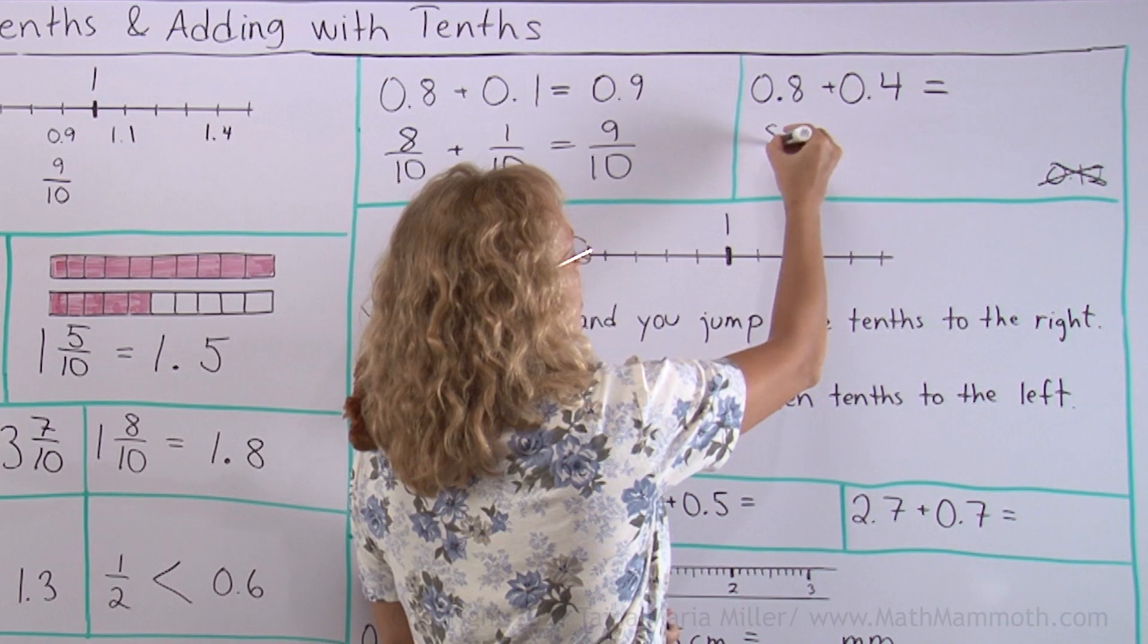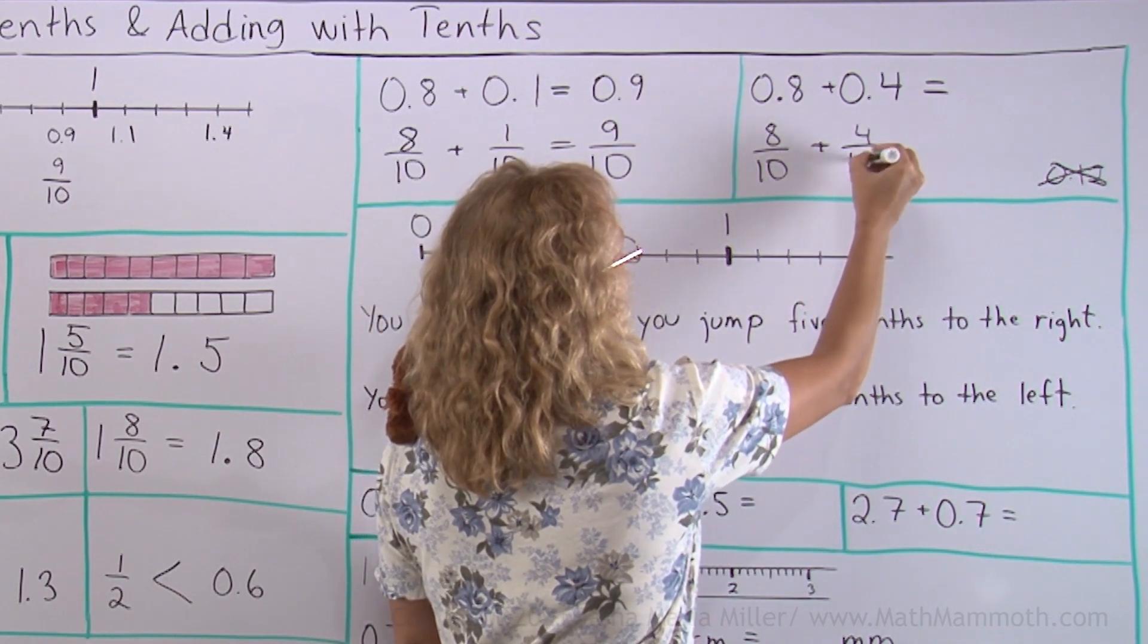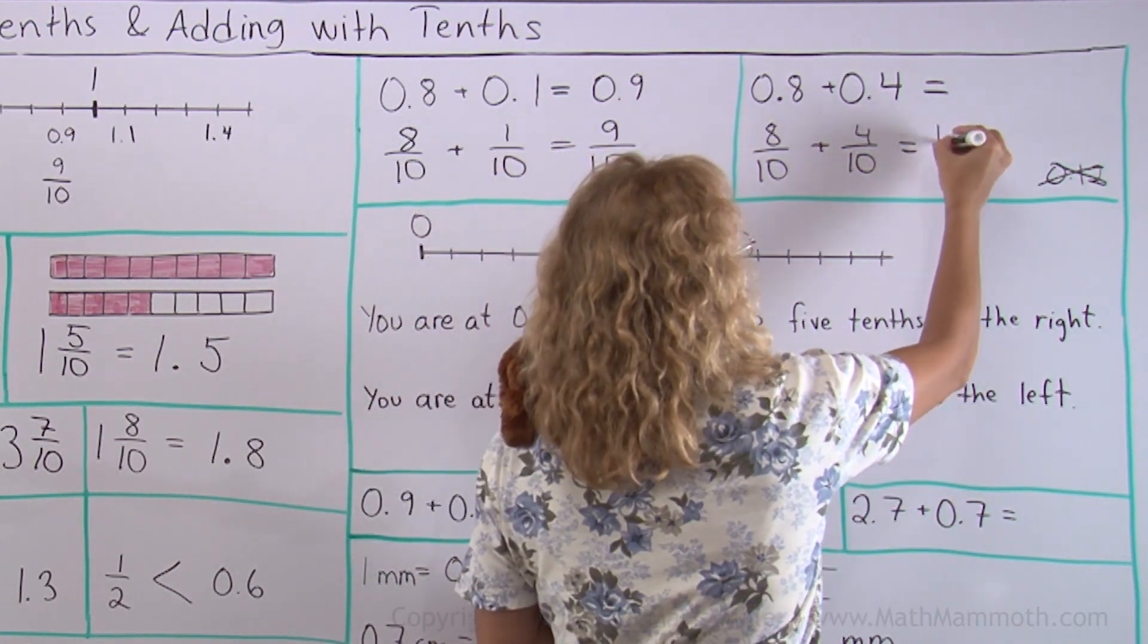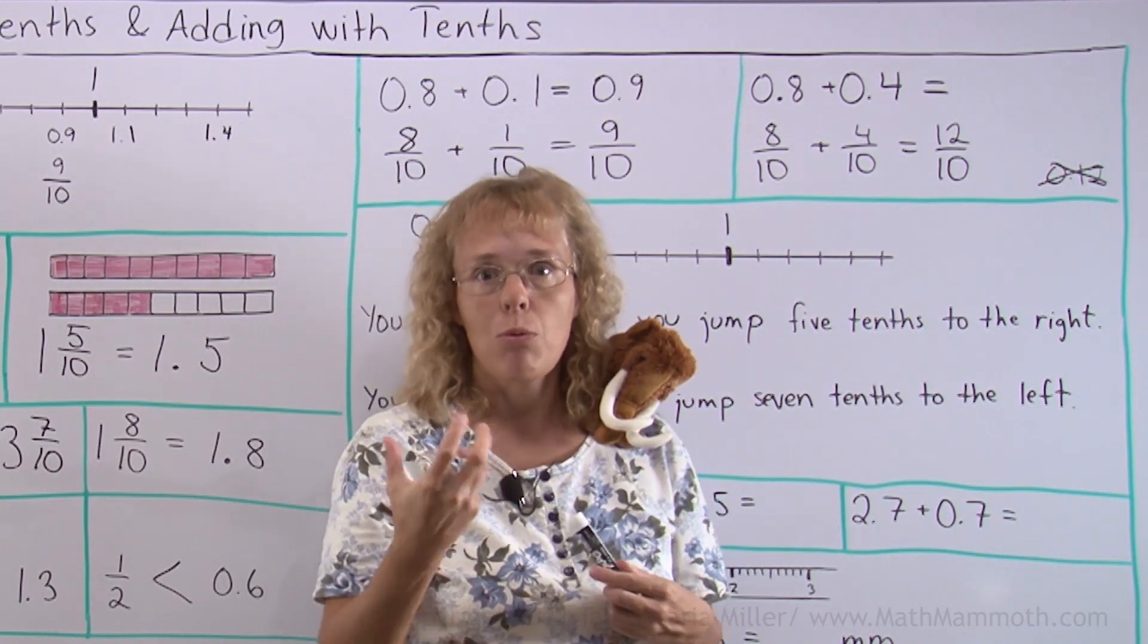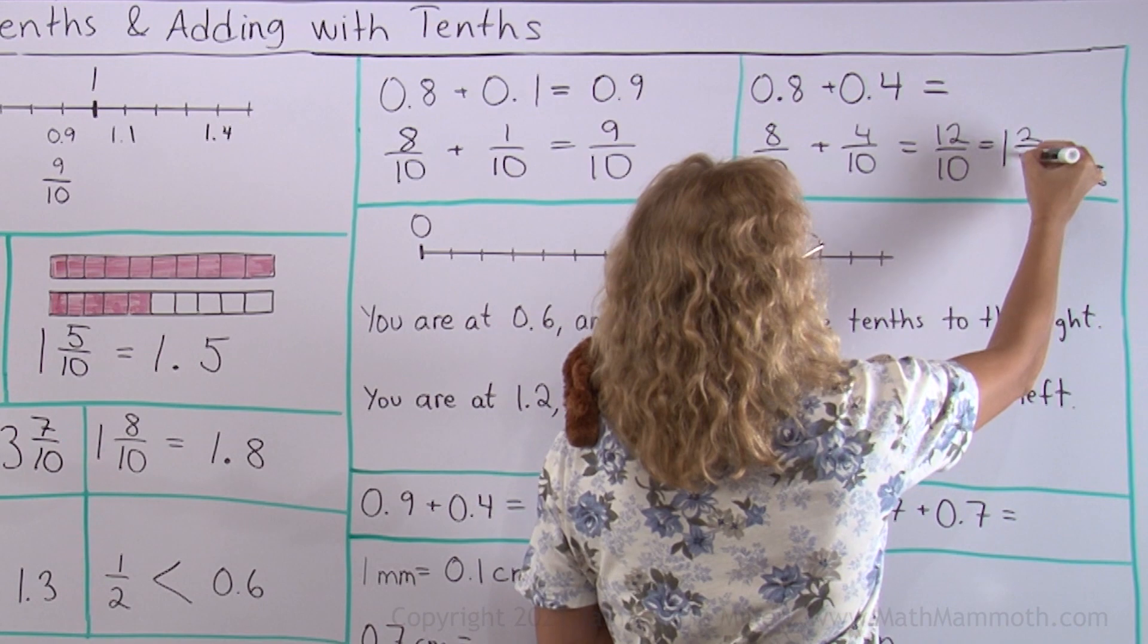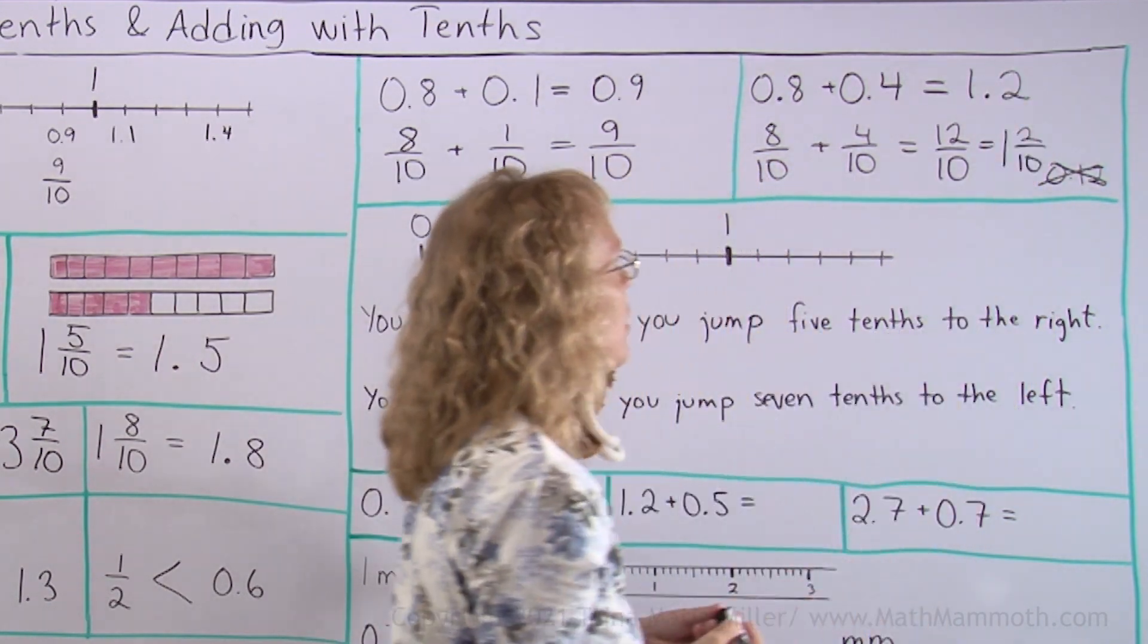Let's write these as fractions, 8 tenths plus 4 tenths. And you should get 12 tenths as an answer, right? But of those, 10 tenths makes 1. So we actually get 1 and then 2 tenths. So it's a decimal, 1.2, there.